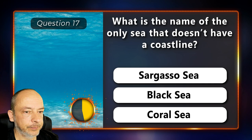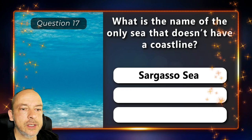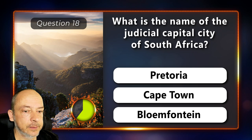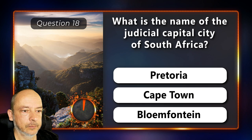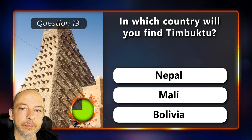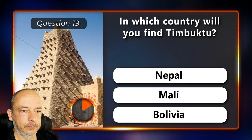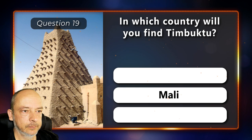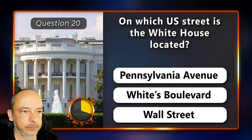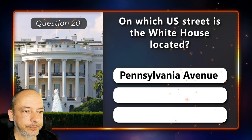Question 17: What is the name of the only sea that doesn't have a coastline? The Sargasso Sea, the Black Sea or the Coral Sea? It's the Sargasso Sea. Question 18: What is the name of the judicial capital city of South Africa? Pretoria, Cape Town or Bloemfontein? The answer is Bloemfontein. Question 19: In which country will you find Timbuktu? In Nepal, Mali or Bolivia? It's in Mali. Question 20: On which US street is the White House located? Pennsylvania Avenue, White's Boulevard or Wall Street? Pennsylvania Avenue.